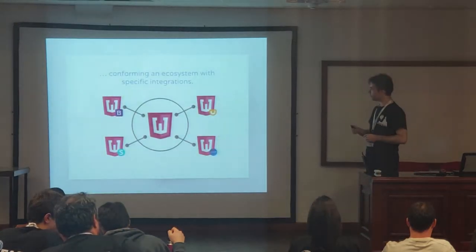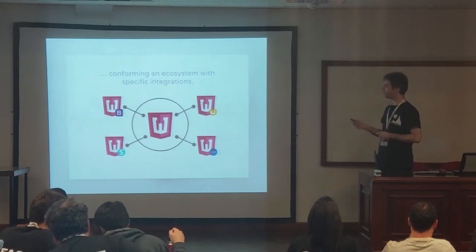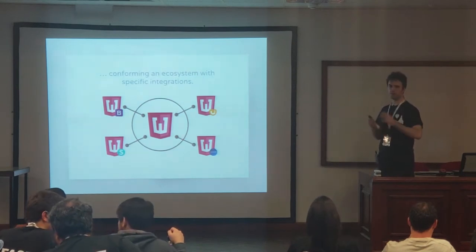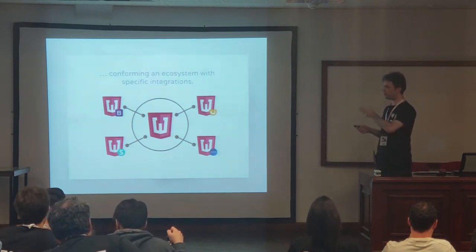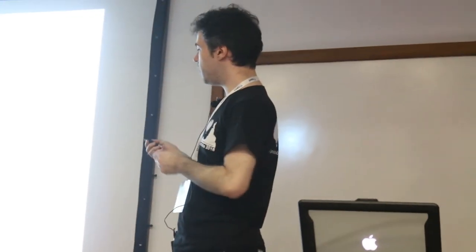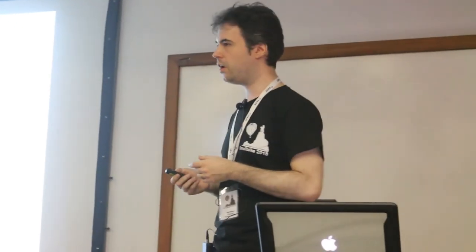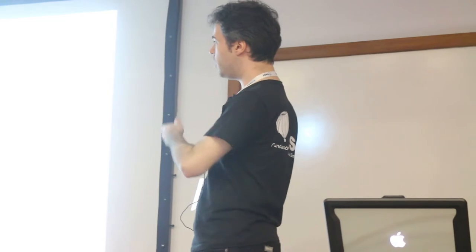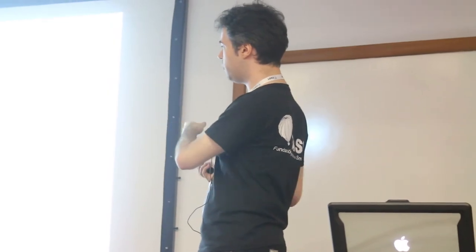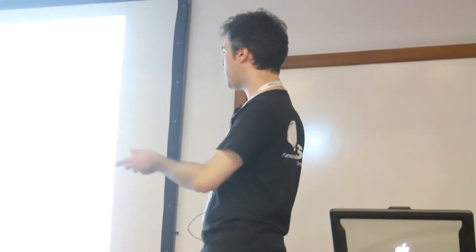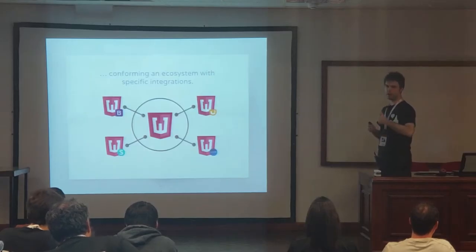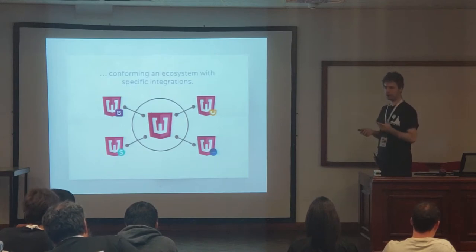It's conformed by an ecosystem with specific integrations. There's the Willow project. Willow is open source, it's available on GitHub, and it's more than one project — a family of projects. There's Willow, Willow-Bootstrap, Willow-jQuery-UI, Willow-Semantic-UI, Willow-Expanet. They give additional affordances to the base web.